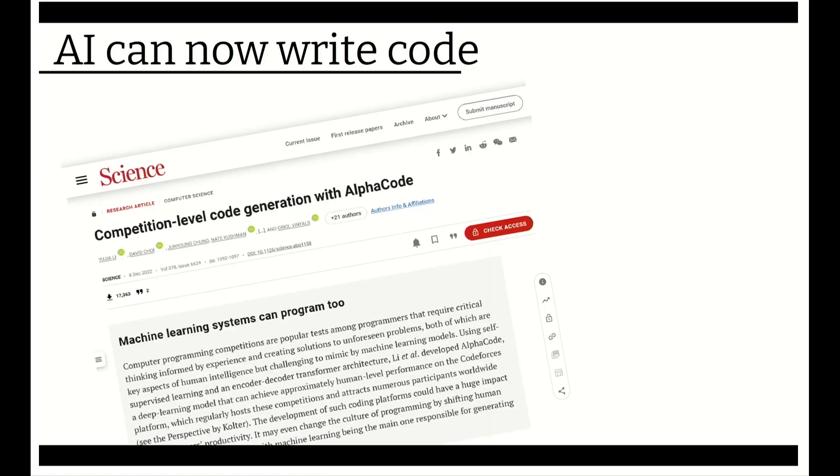In particular, there was a real turning point back in 2022 when, suddenly, DeepMind demonstrated a system called AlphaCode that was actually capable of placing over the 50th percentile on a programming competition. And this was regarded as a real milestone.